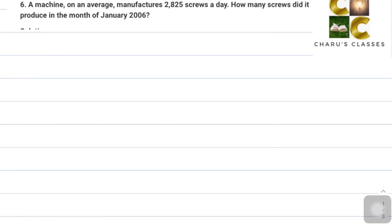So there is a machine that makes 2,825 screws per day. We need to find how many screws it makes in January 2006. January has 31 days, so we have to multiply this number with 31.